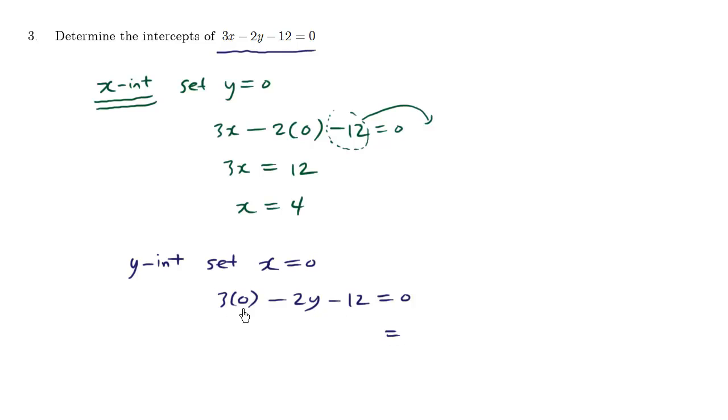So this here disappears, anything times zero is zero. The negative two y goes over and becomes a positive two y. And the negative twelve remains. We're going to divide both sides by two, and we get y equals negative six. So this here is the y-intercept,